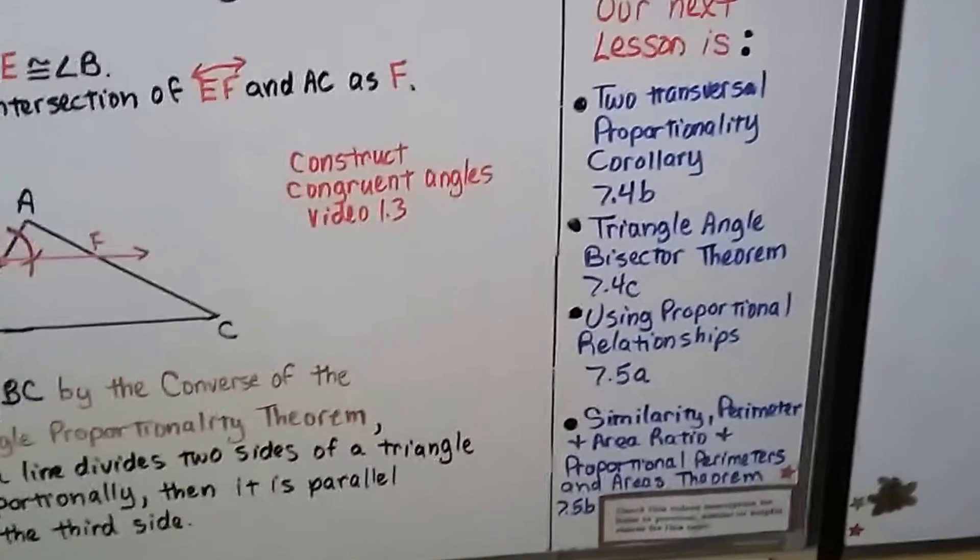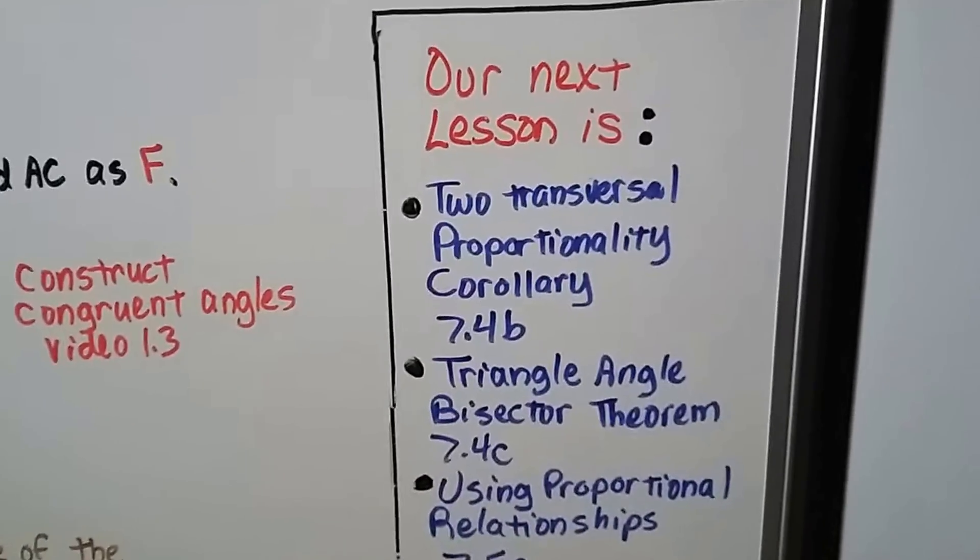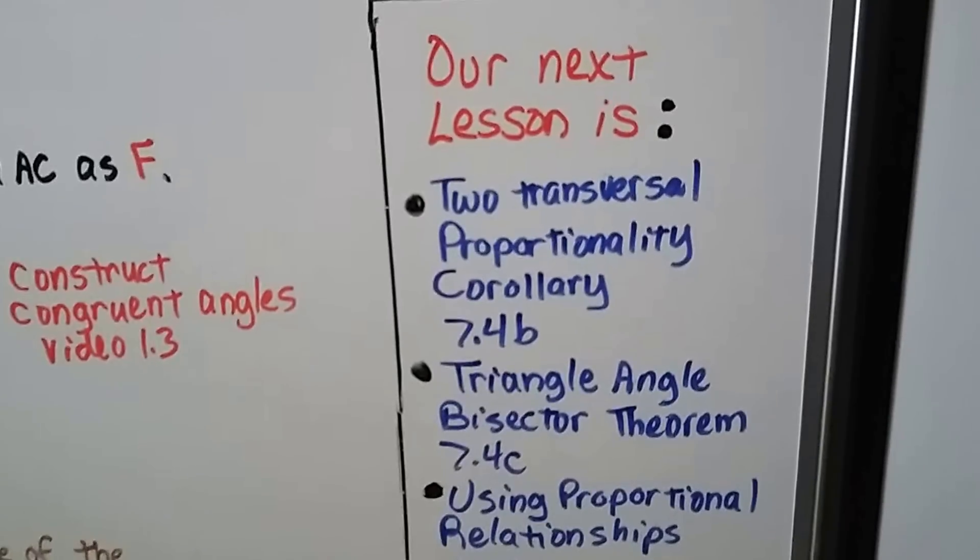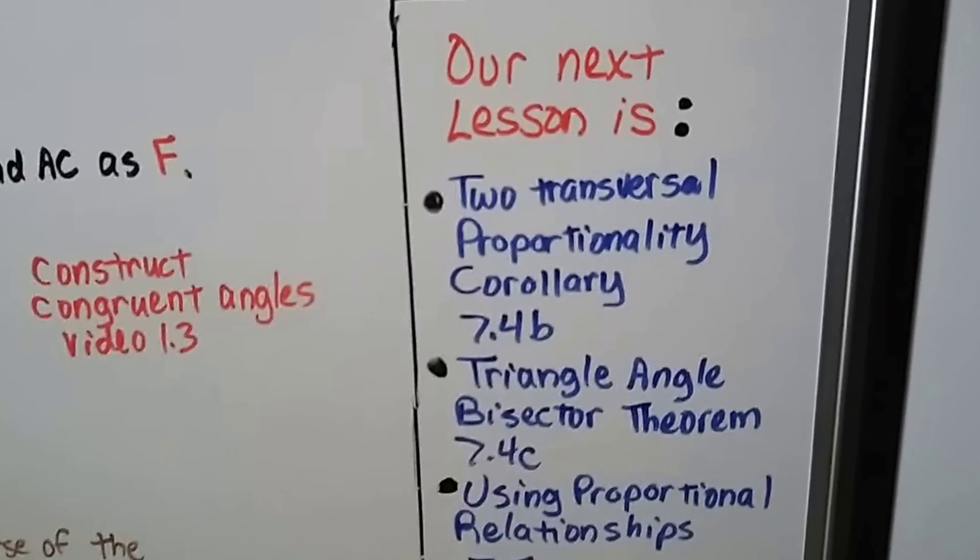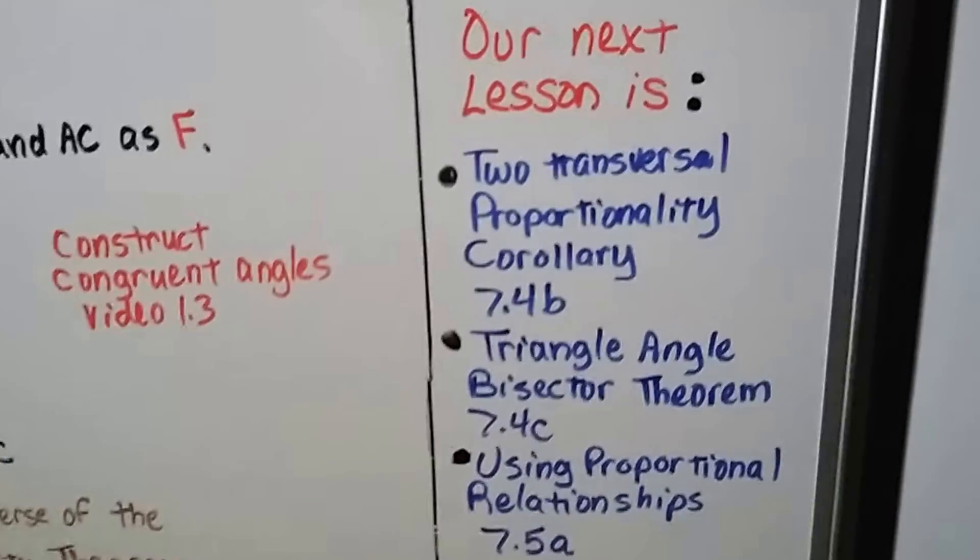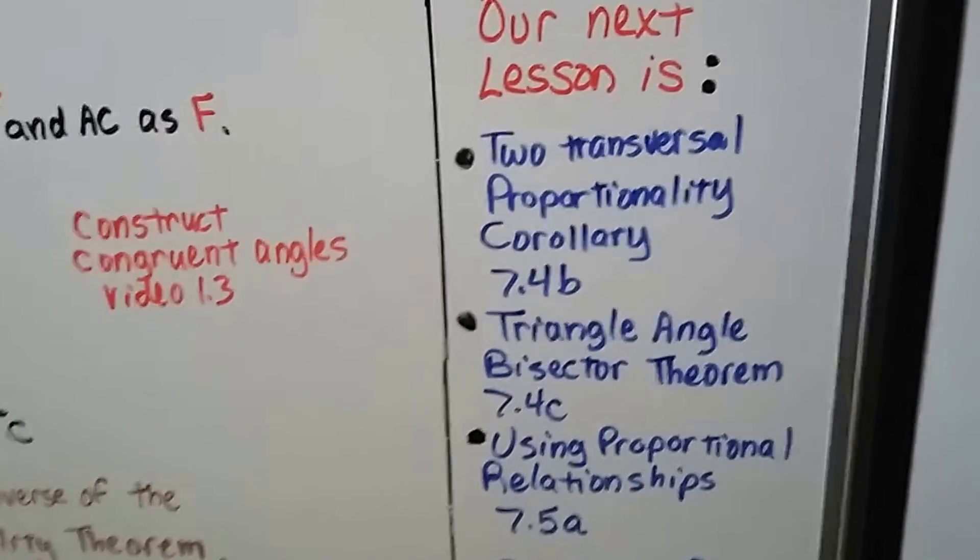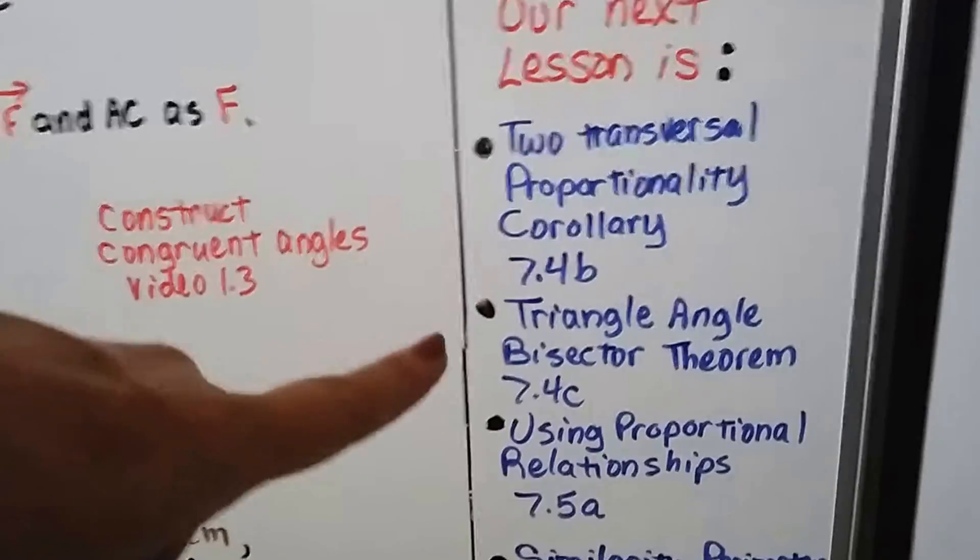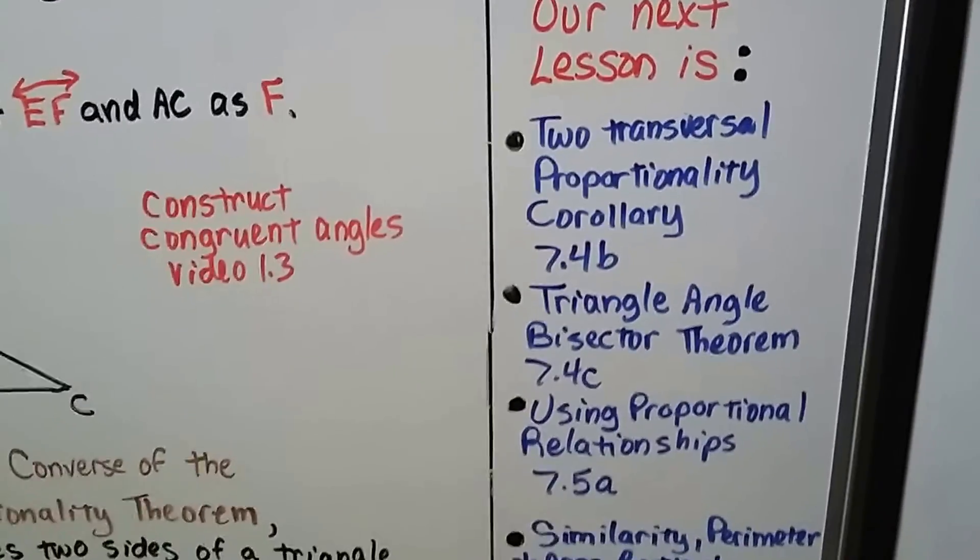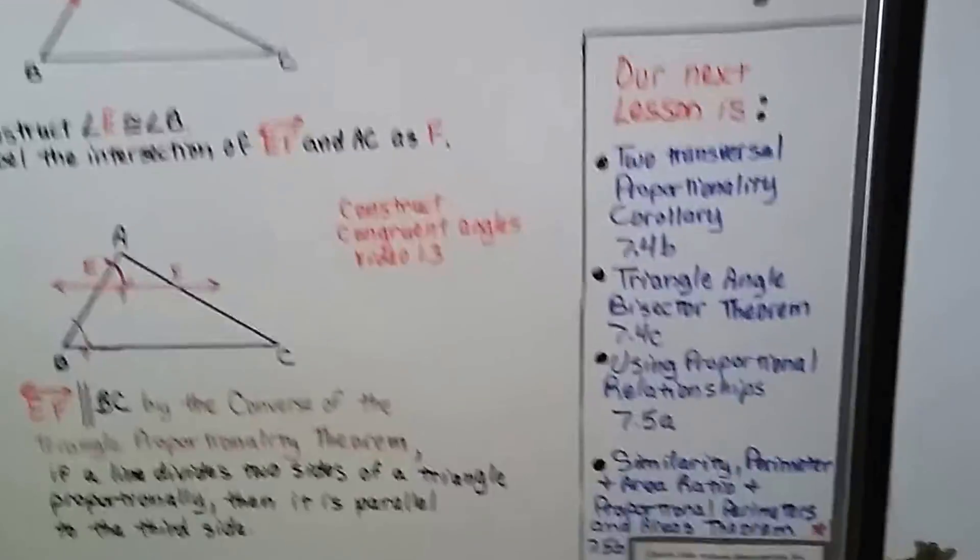That theorem says if a line divides two sides of a triangle proportionally, then it's parallel to the third side. Our next lesson is going to be about the two-transversal proportionality corollary. That's 7.4B. Then we're going to do triangle-angle bisector theorem 7.4C. This is the second part of our lesson and that's the third part of our lesson. So you should watch both of those before we move on to the next lesson.